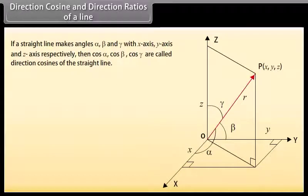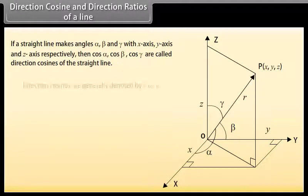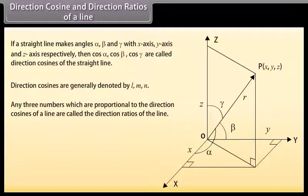Direction Cosine and Direction Ratios of a Line. If a straight line makes angles Alpha, Beta and Gamma with the X axis, Y axis and Z axis respectively, then Cos Alpha, Cos Beta, Cos Gamma are called Direction Cosines of the Straight Line. Direction Cosines are generally denoted by L, M, N. Any 3 numbers which are proportional to the Direction Cosines of a Line are called the Direction Ratios of the Line.